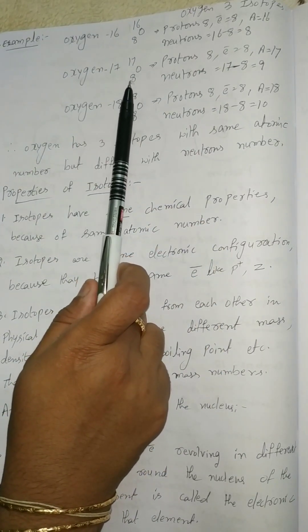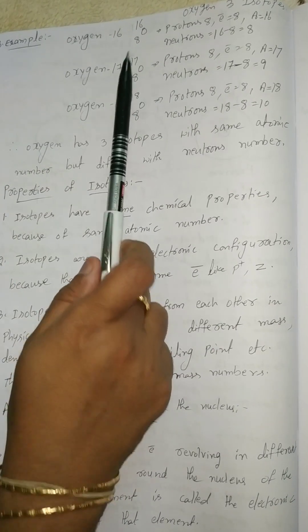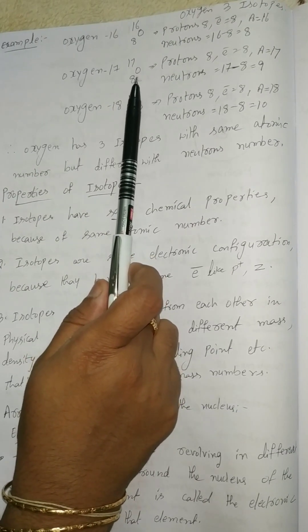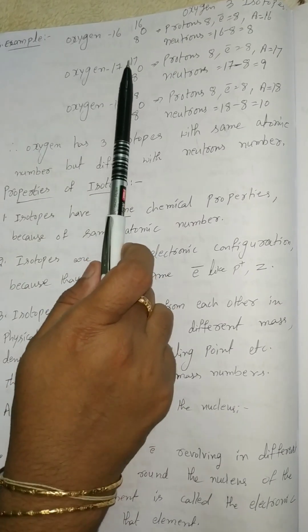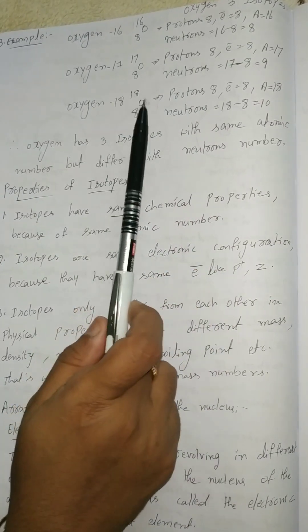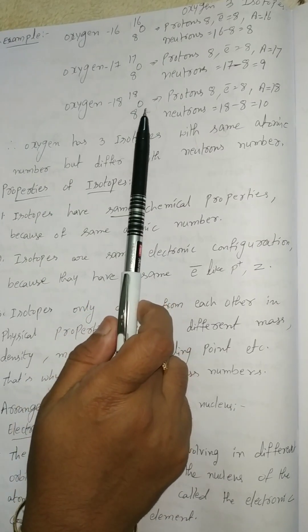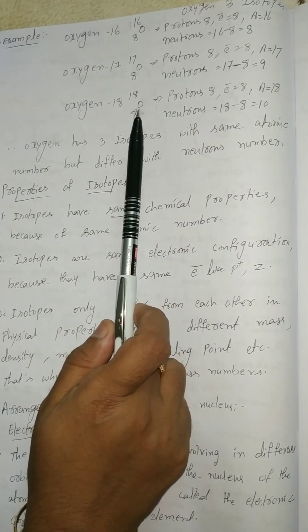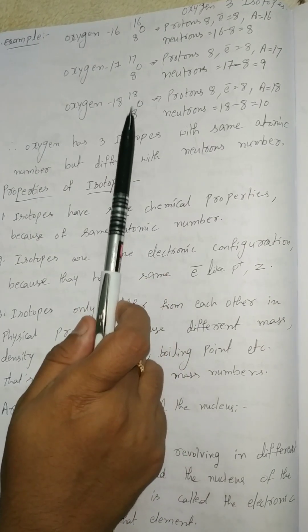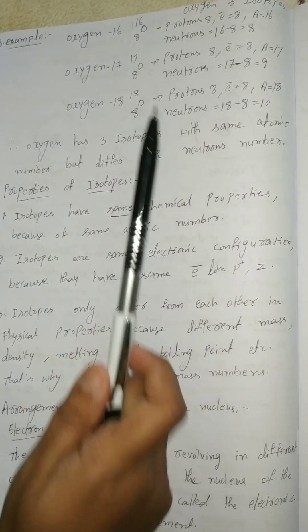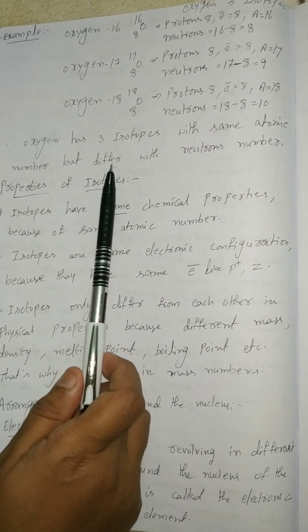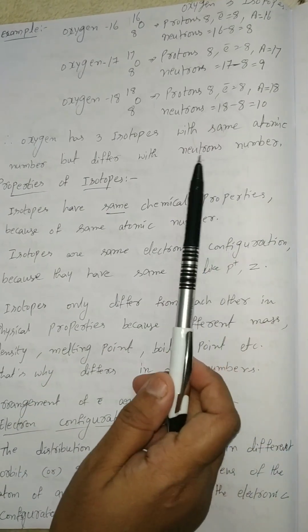Oxygen-17: 8O17. Z equals 8, protons 8, electrons 8. Neutrons equal to A minus Z: 17 minus 8 equals 9. So 9 neutrons. Oxygen-18: 8O18. Protons 8, electrons 8, Z equals 8. Neutrons equal to A minus Z: 18 minus 8 equals 10. So oxygen has 3 isotopes with the same atomic number but differing in neutron number.